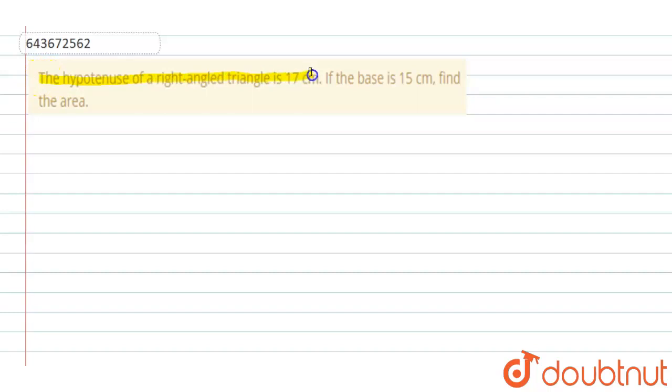hypotenuse of a right angle triangle is 17 cm. If its base is 15 centimeters, find the area. So in this question it is given that a right angle triangle whose hypotenuse is 17 centimeters and base is 15 centimeters. We have to find the area of that triangle.